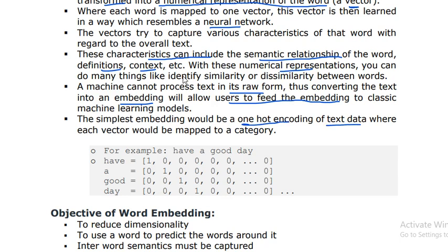The simplest embedding would be one-hot encoding of text data, where each vector would be mapped to a category. For example, with the phrase 'have a nice day', the word 'have' is represented by one vector, 'a' is represented by another, and so on.